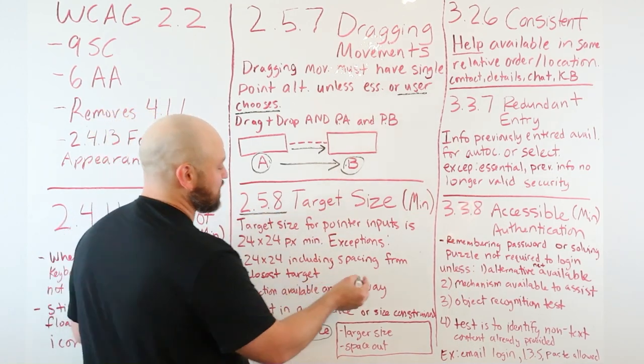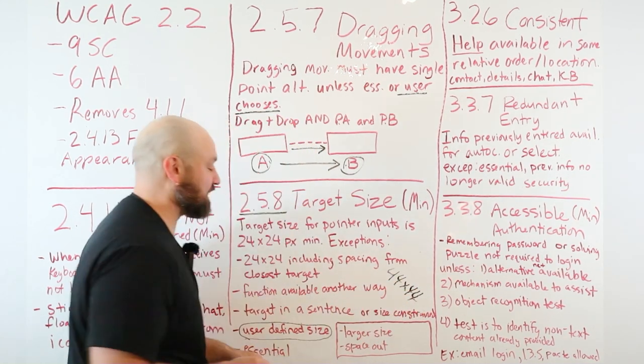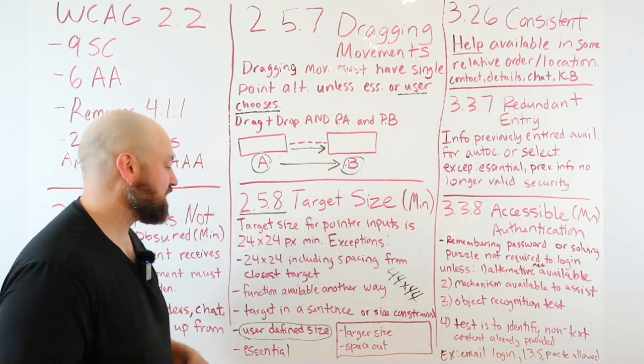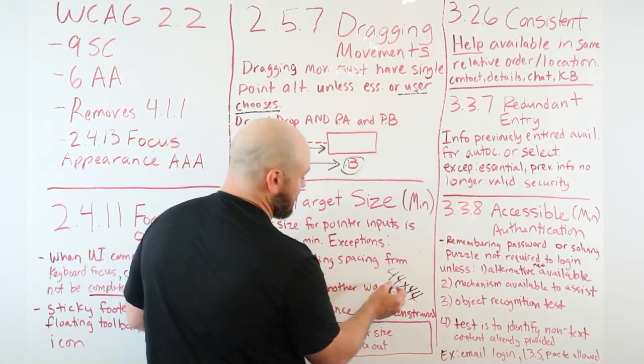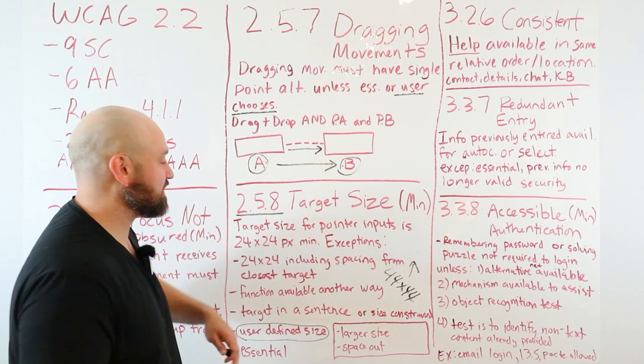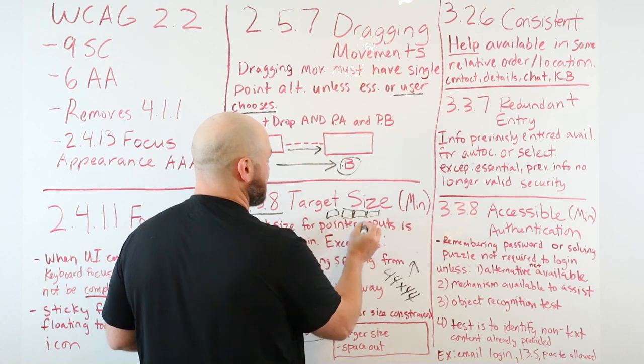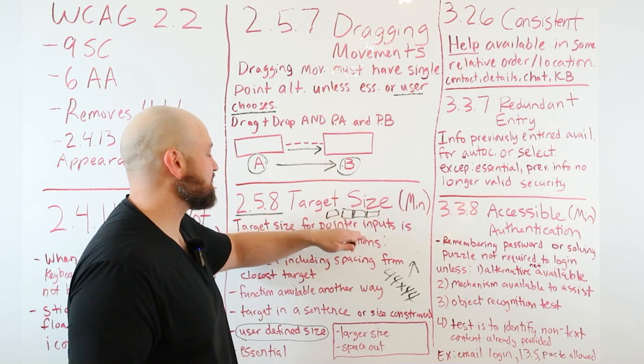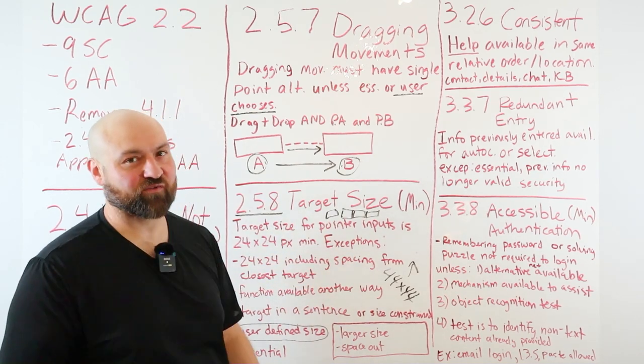The point here is that we make sure our target sizes are large enough. I recommend why even play with the minimum threshold, just go with 44 by 44, which is in the triple A success criterion. Make it easy, make your targets large, and that way it's easy to input them or select them. Larger size, space out, so not only 44 by 44, but put some space between the next element. Whether it's social icons stacked horizontally, put some space between them. Make them large enough and put some space in between. That's all this is getting at, making sure our targets are sufficiently large enough.